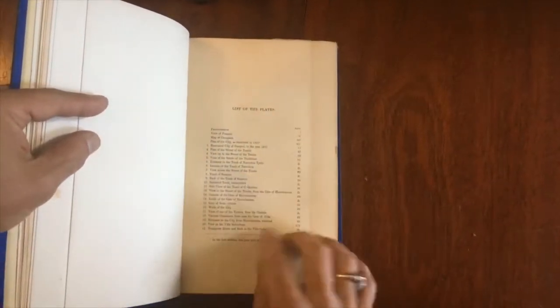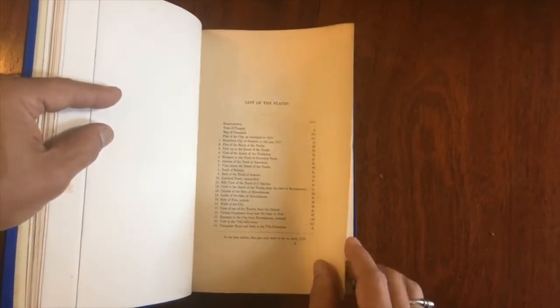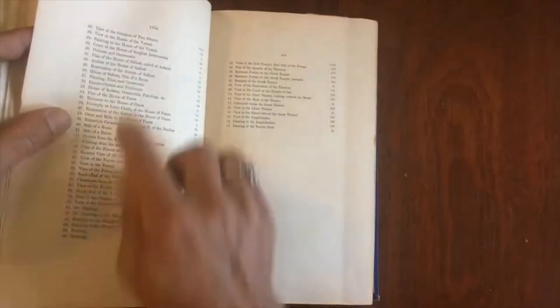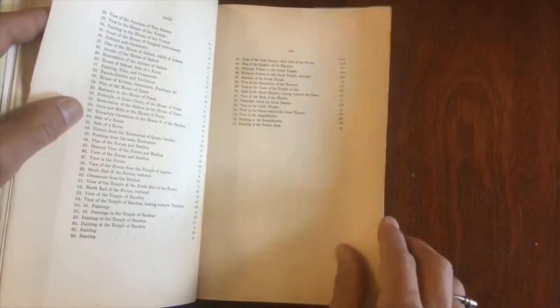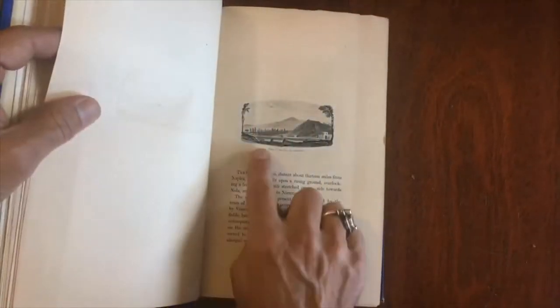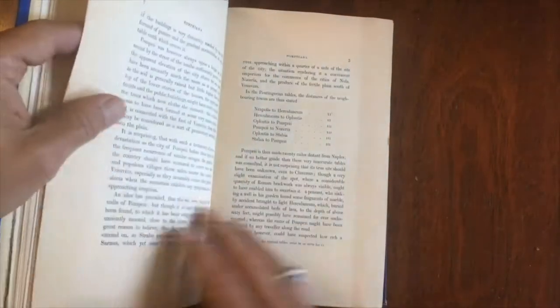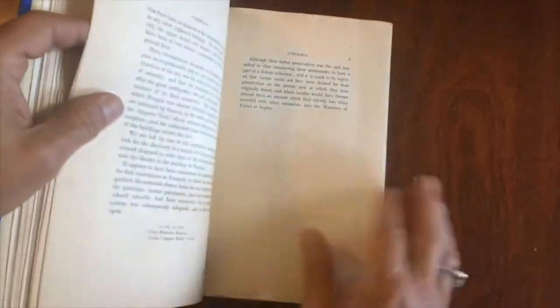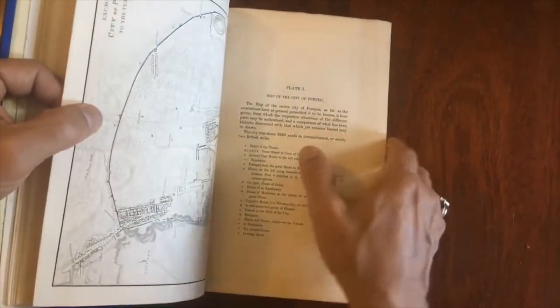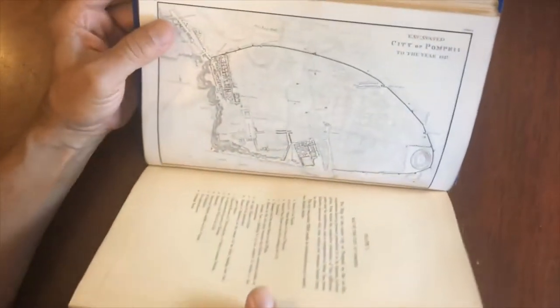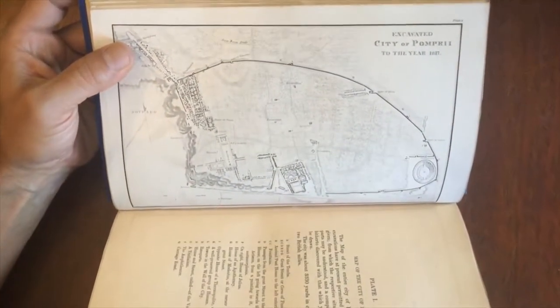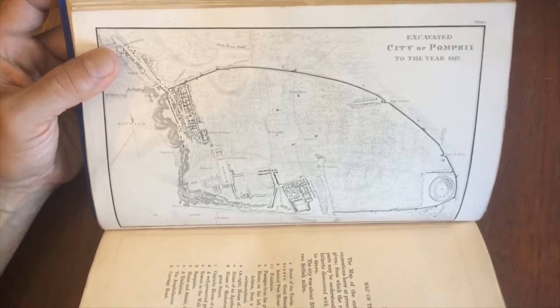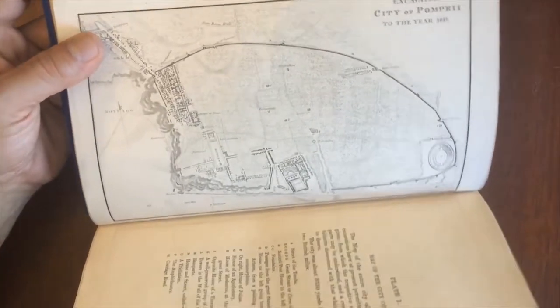Here's a list of all of the plates, and you can see there are 77 plates within, including these small little vignette engravings like so. And then we've got this little map here, and this is as the city was excavated up until the year 1817.